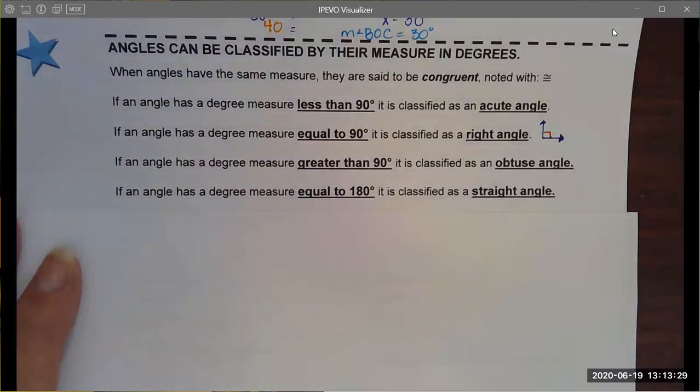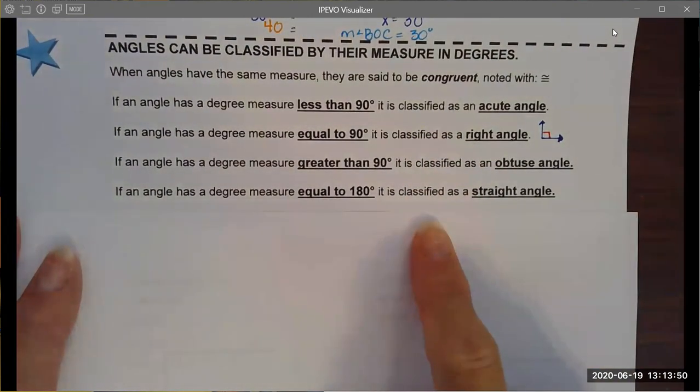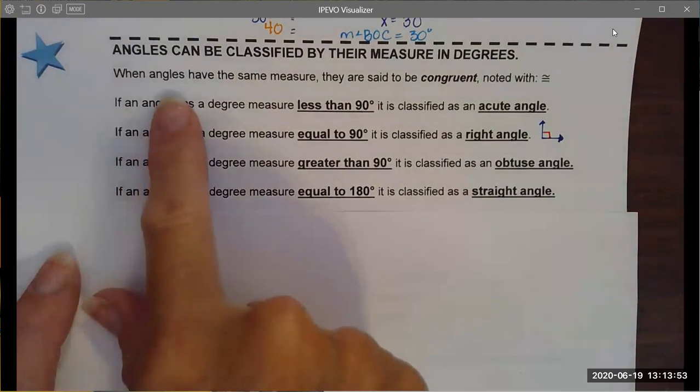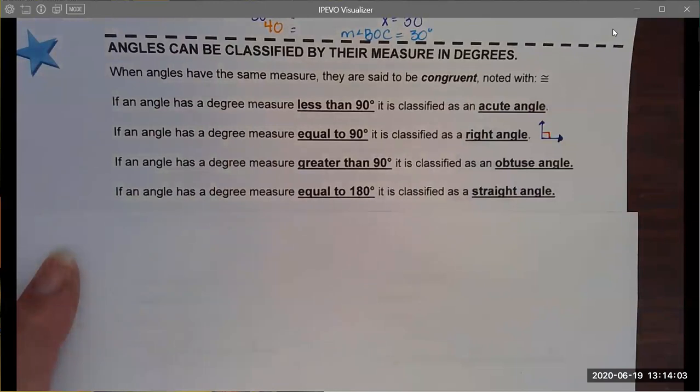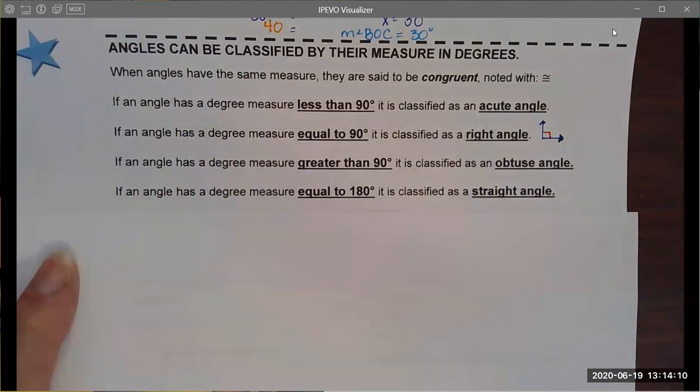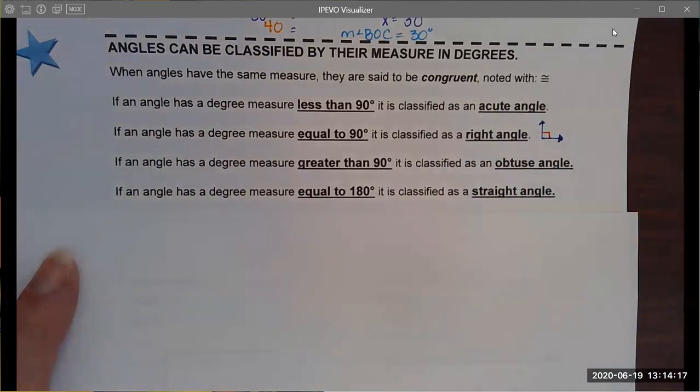The next thing that we're going to tackle is a way to classify angles by their measurements in degrees. There are technically two ways to classify angles: we can classify them by their angle measures, or we could also classify them by the lengths of their sides, and that is not something we're doing in this unit. These are terms that I'm hoping you're all very comfortable with. The only thing you might not have seen before is that when angles have the same measure they are said to be congruent and we denote that with an equal sign with a squiggly over the top of it.